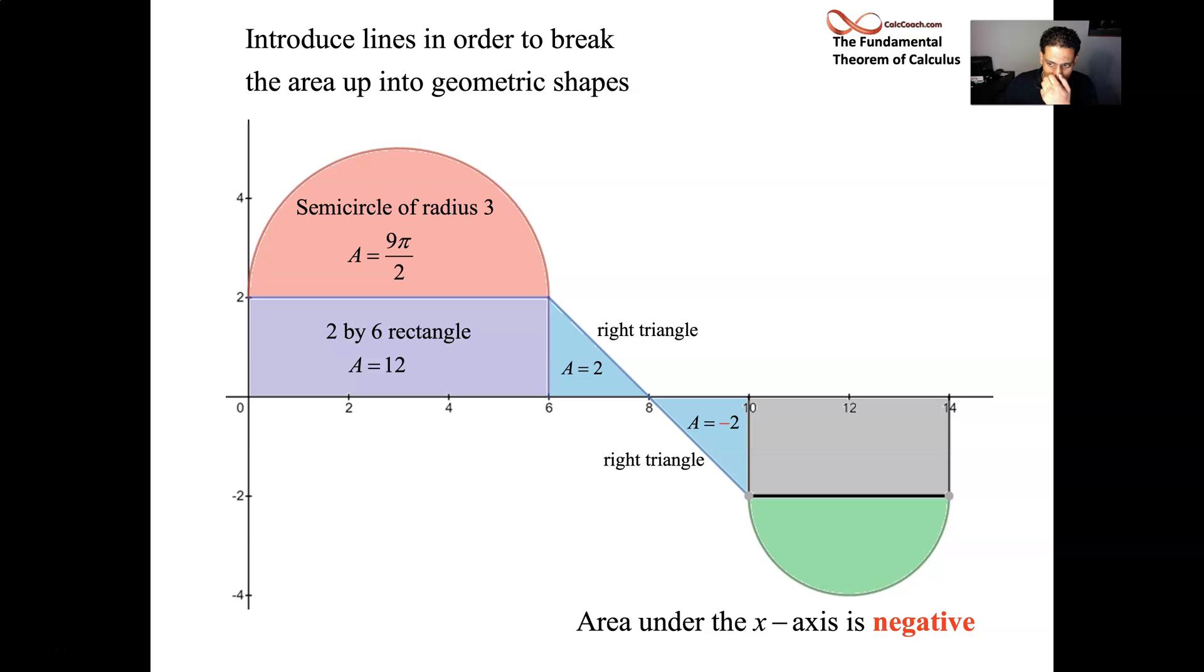That rectangle is a 4 by 2 rectangle. So that's a negative 8. And then that semicircle has a diameter of 4. So a radius of 2. So instead of 4 pi, it's 4 pi over 2 or 2 pi. But negative 2 pi. We are ready to answer any question that we might be asked about this.